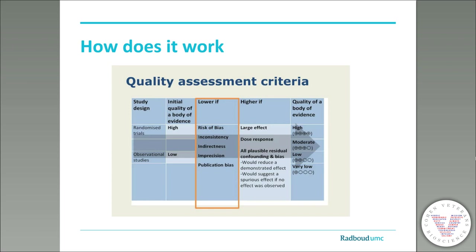The certainty or quality of the evidence can be graded in four categories: high, moderate, low, or very low. In the original clinical GRADE framework, RCTs start as high quality and observational studies start as low quality evidence. There are 5 factors that can reduce the quality or certainty in the evidence — risk of bias, inconsistency, indirectness, imprecision, and publication bias — and 3 factors that can upgrade the quality. In the end, you arrive at a GRADE of the total body of evidence, not at individual studies.